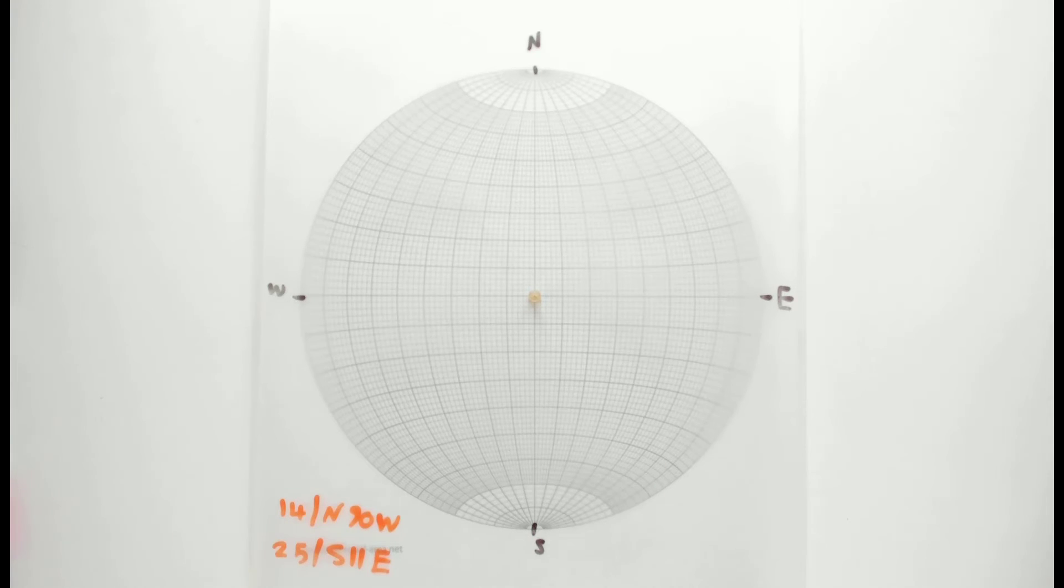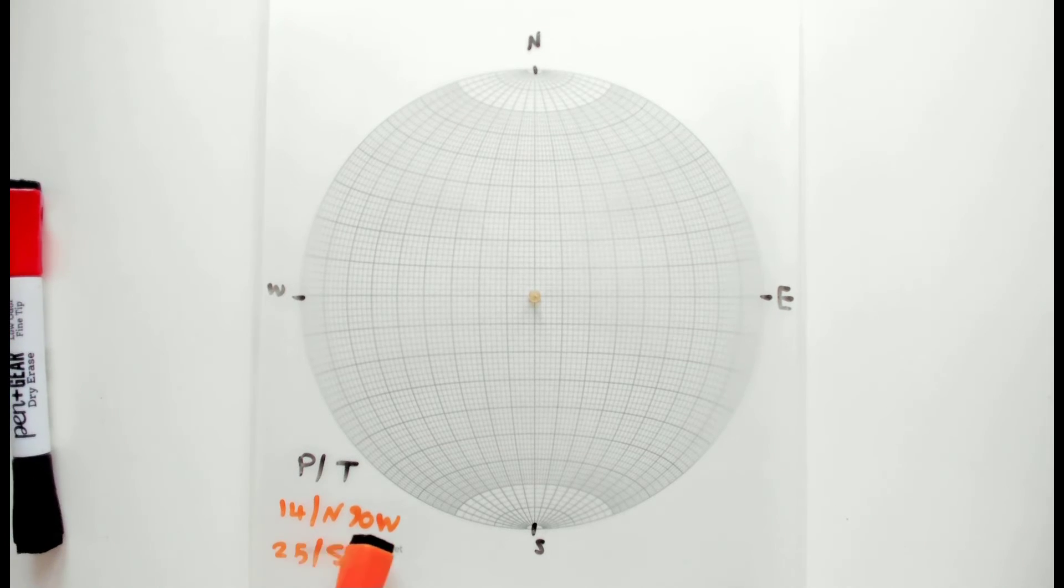So the numbers that are given here are indeed plunge and trend. This is the plunge and this is the trend, and this format that it's given is the format of the trend: letter, number, and letter.